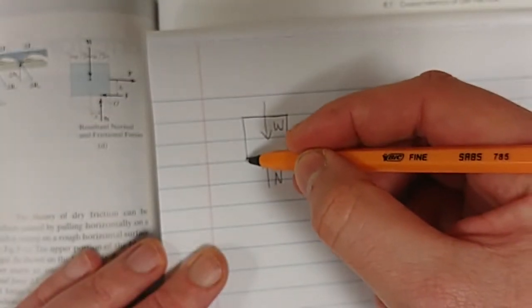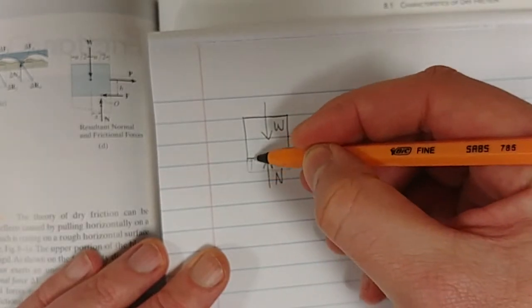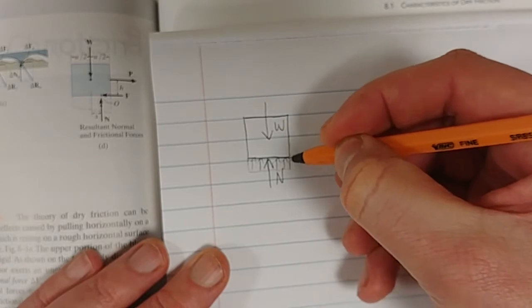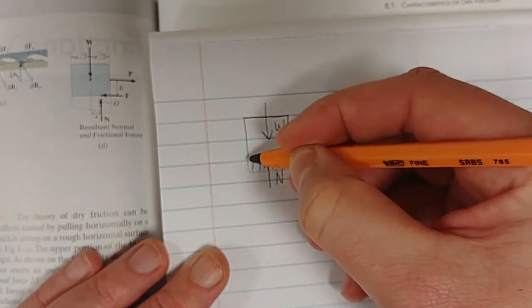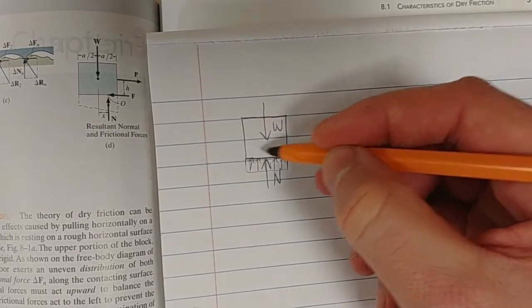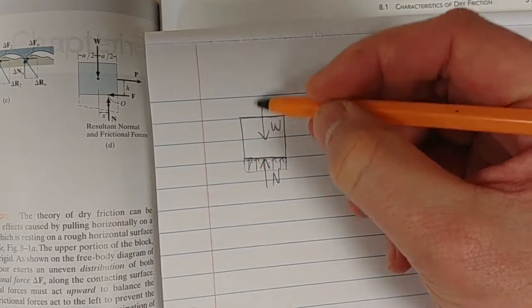But actually, that normal force, and the reason why I want to do this is you'll see a bit later, actually that normal force is a distributed force. Obviously, because there's a surface contact, we have a distributed normal force, in the same way, actually, with the weight.